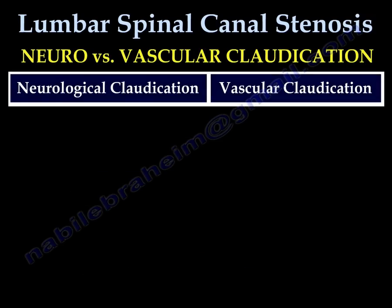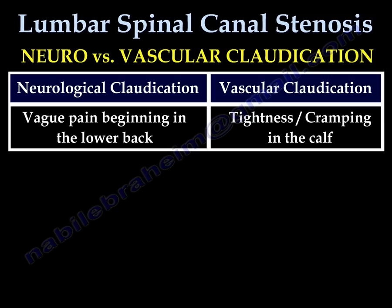It is important to distinguish neurogenic claudication versus vascular claudication. In neurological claudication, you find vague pain beginning in the lower back — it is proximal. In vascular claudication, there is tightness and cramps in the leg and calf — it starts distal.